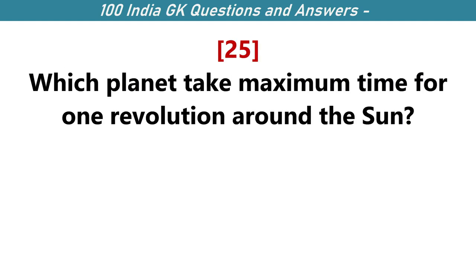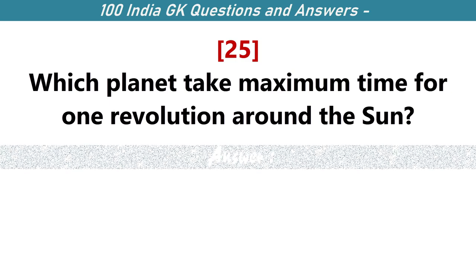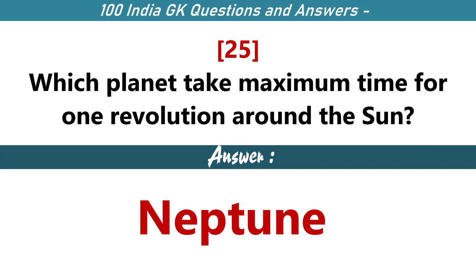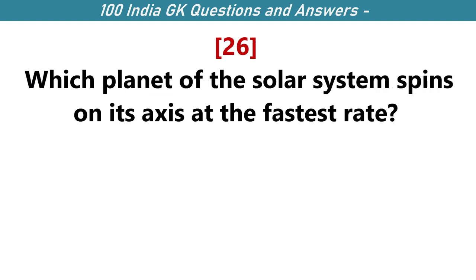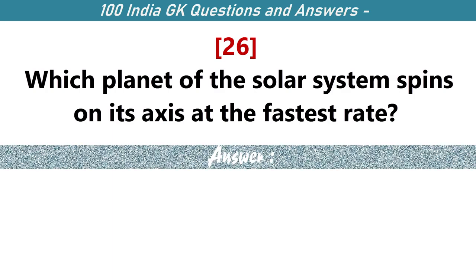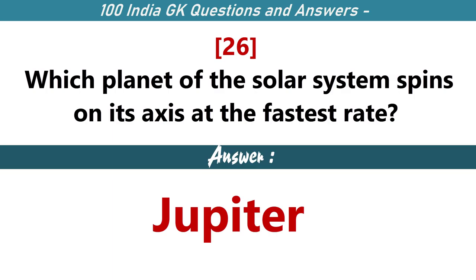Which planet takes maximum time for one revolution around the sun? Neptune. Which planet of the solar system spins on its axis at the fastest rate? Jupiter.